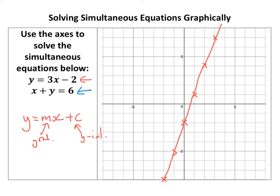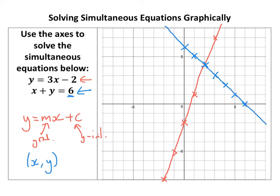The second equation says that the x-coordinate and the y-coordinate add up to make 6. So coordinate pairs include: 0 and 6, 6 and 0, 3 and 3, 4 and 2, 2 and 4, 1 and 5, 5 and 1. I've got a whole load now and I'm going to try to draw this as accurately as possible. Make sure you use a ruler.